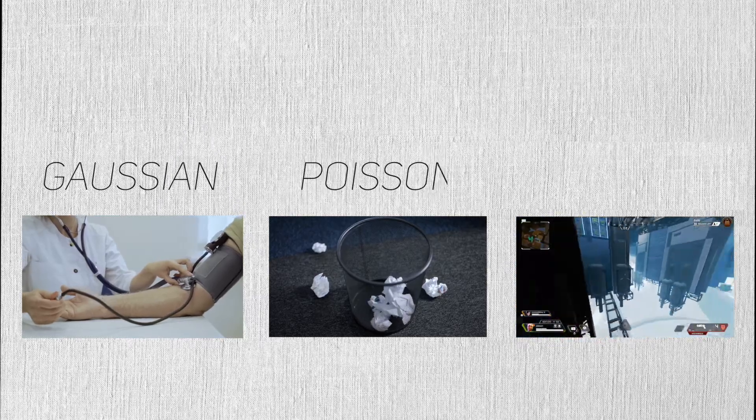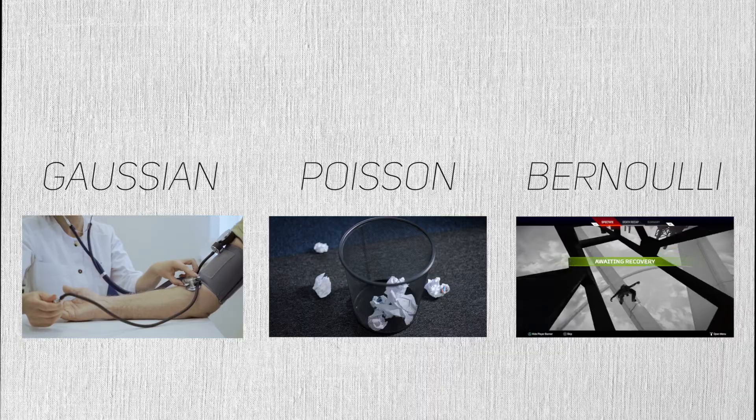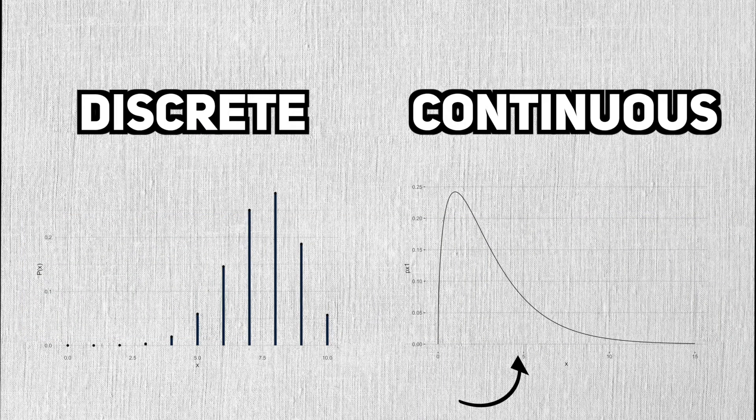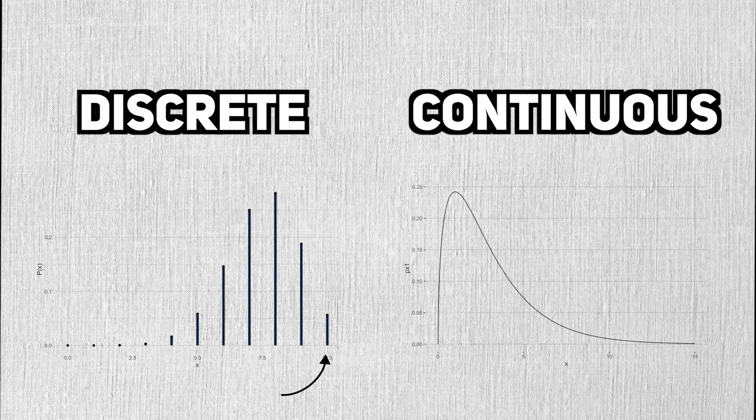Depending on what the experiment is, a random variable can either be discrete or continuous. Continuous random variables have sample spaces on the continuum, whereas discrete values do not do this.